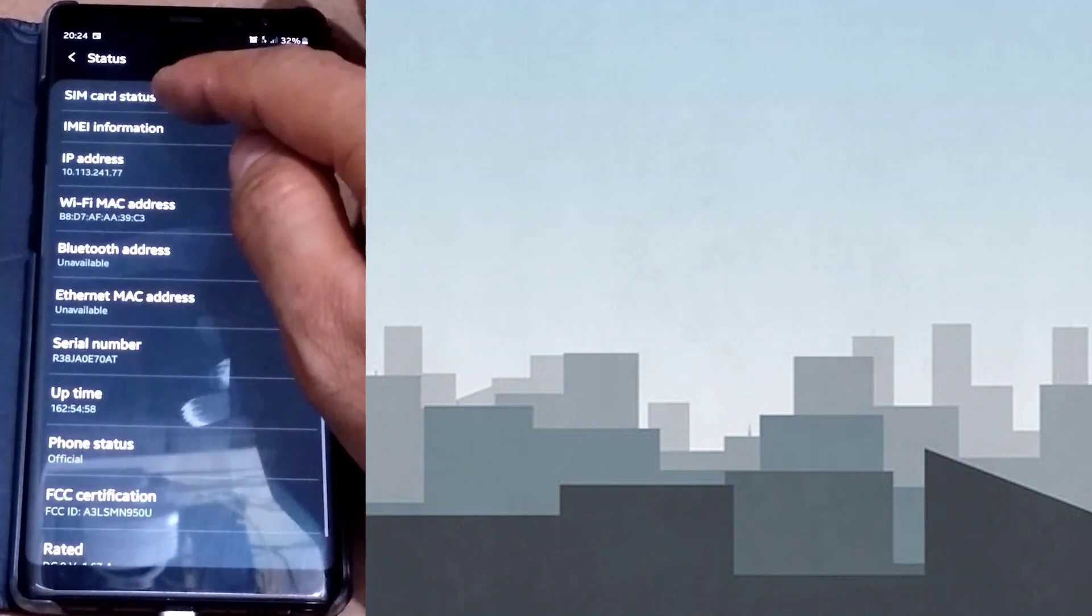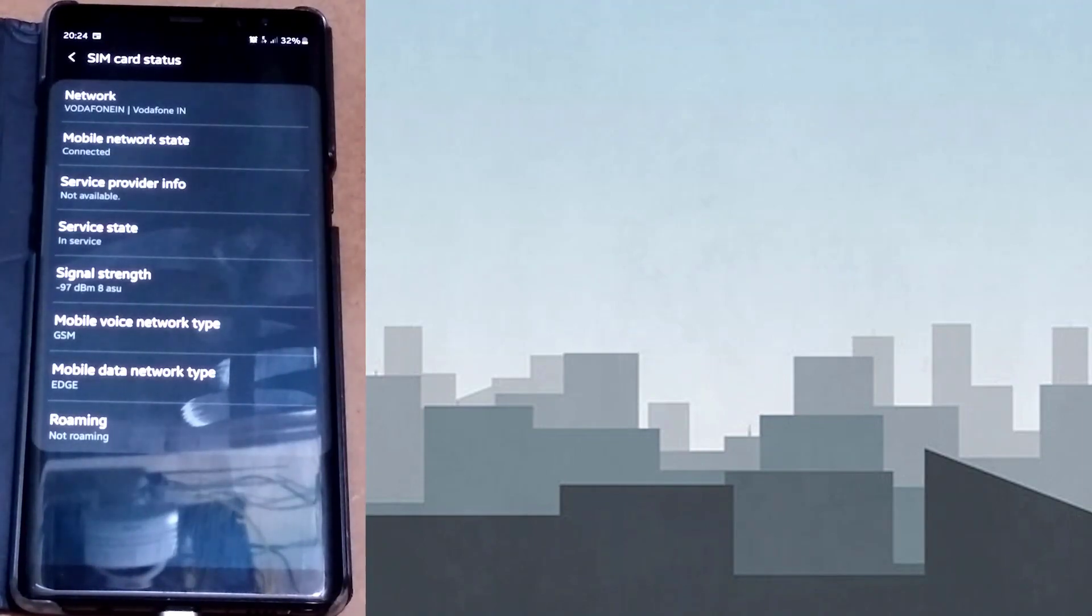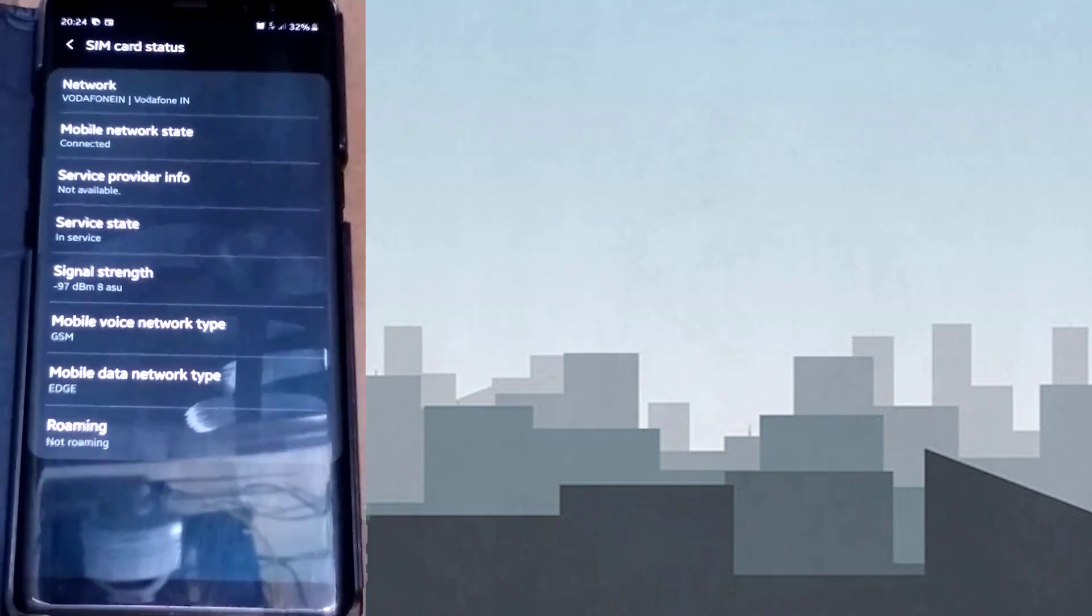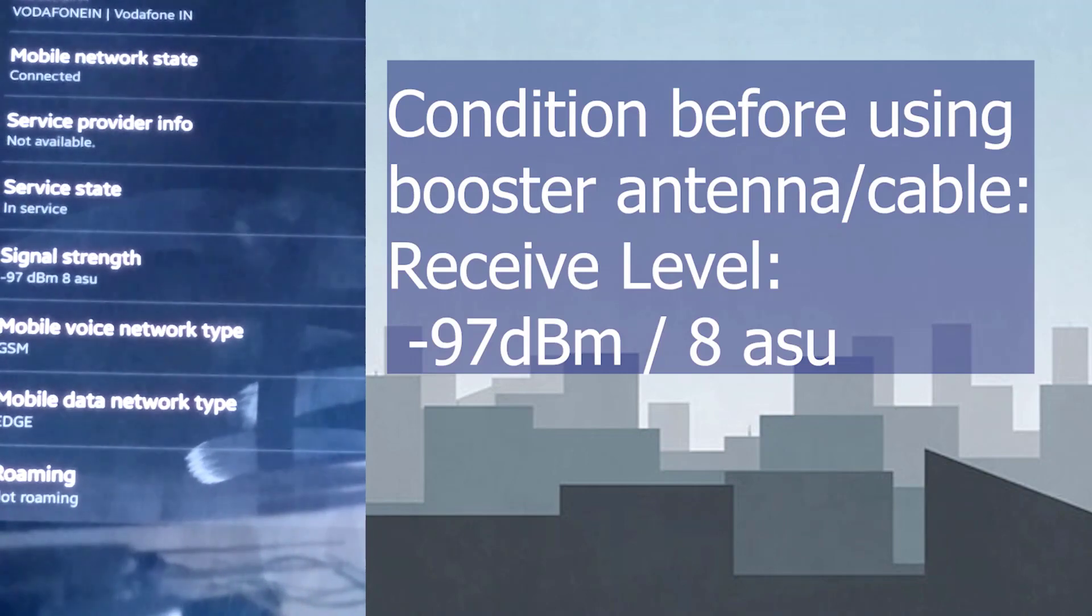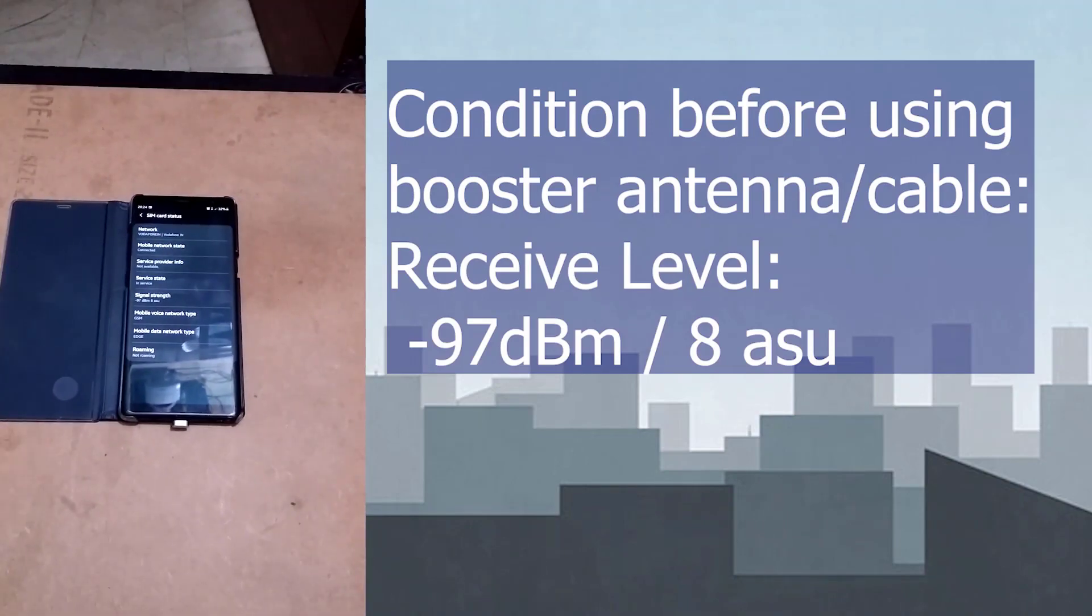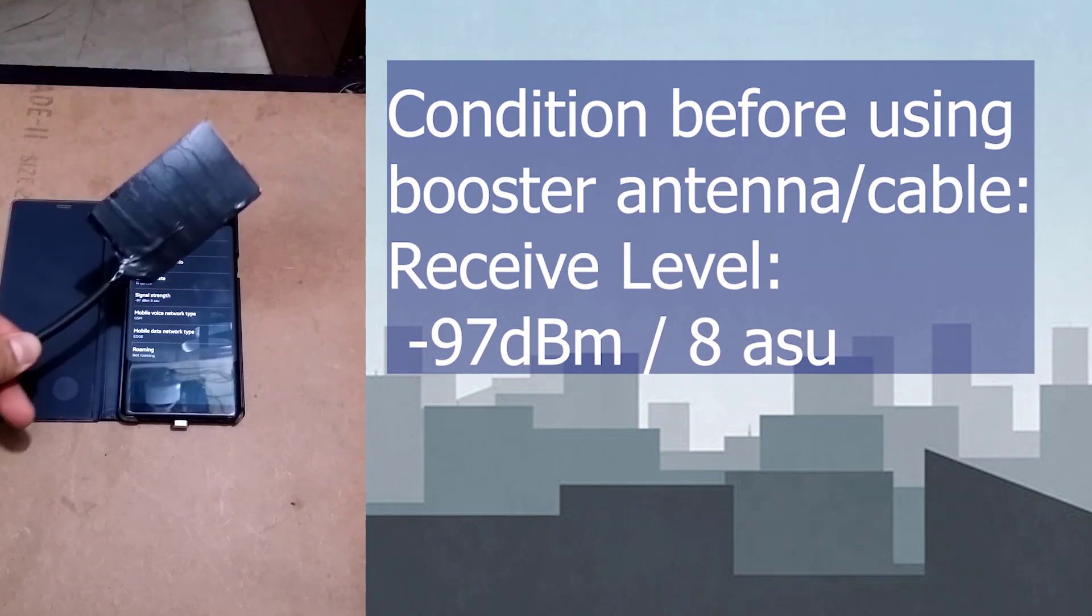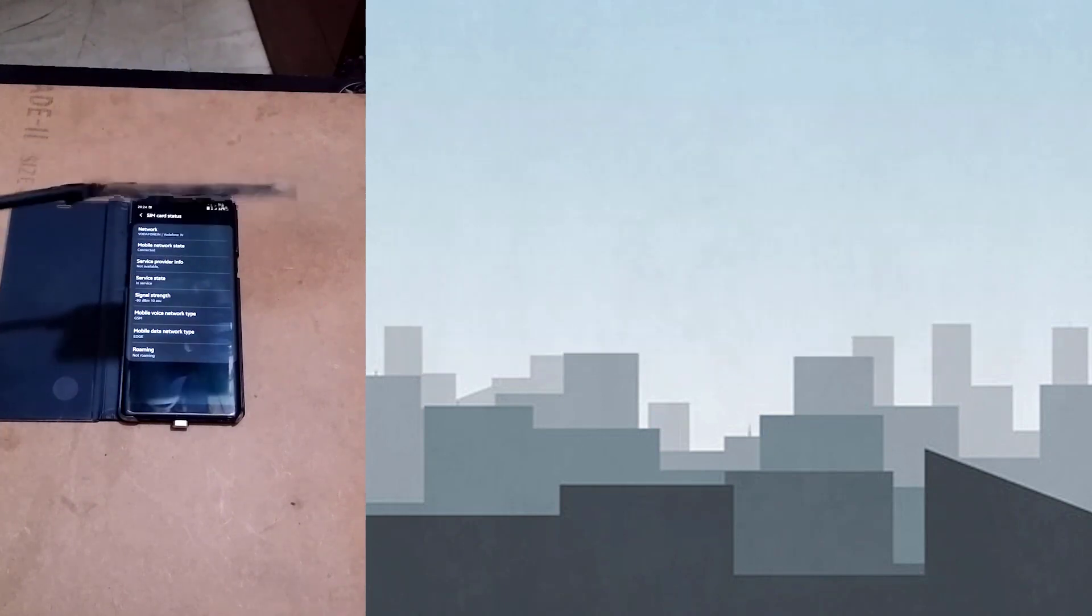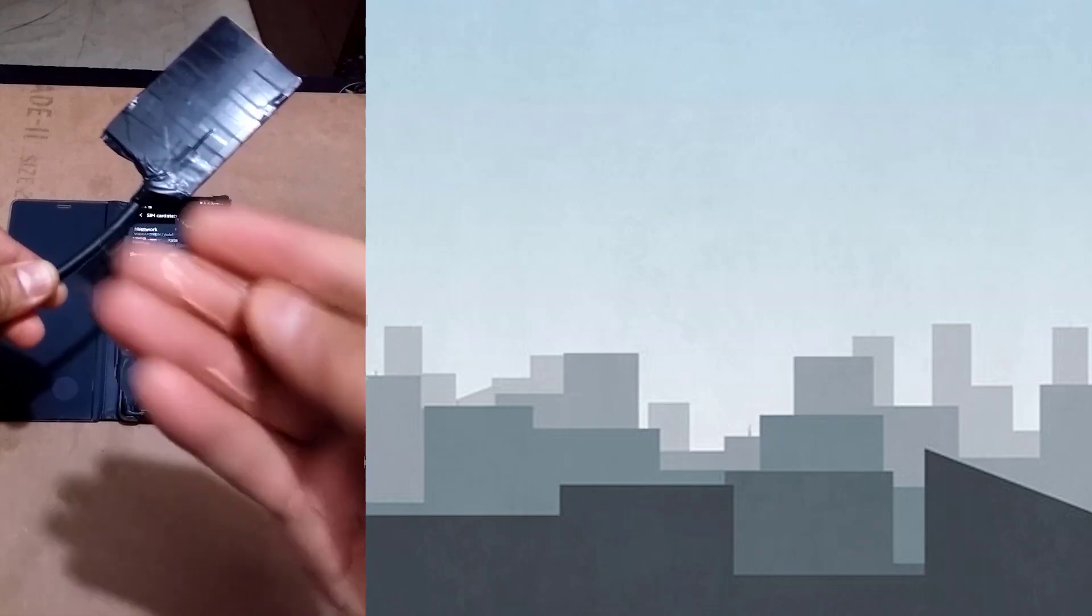Here you can see the condition before using the booster antenna or cable. The receive level normally is minus 97 dBm or 8 ASU, which is not a good signal at all. In fact, most of the calls will get dropped at this receive level. Here is the other end of the cable where the core conductor is bent in this shape and capped between two plastic cards.